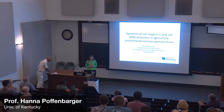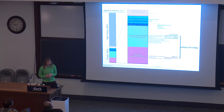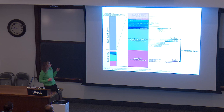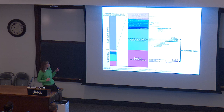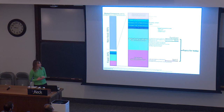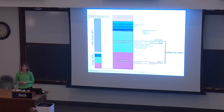I'm going to transition into talking more about dynamics of soil organic carbon and greenhouse gas emissions, focusing on the environmental and management drivers. This is showing a breakdown of global greenhouse gas emissions, with about 34 percent coming from food systems. Within that, about 32 percent comes from land use and 39 percent from production. We're specifically going to talk about soil carbon dynamics in cultivated soils, nitrous oxide associated with fertilizer use, and methane production from rice.